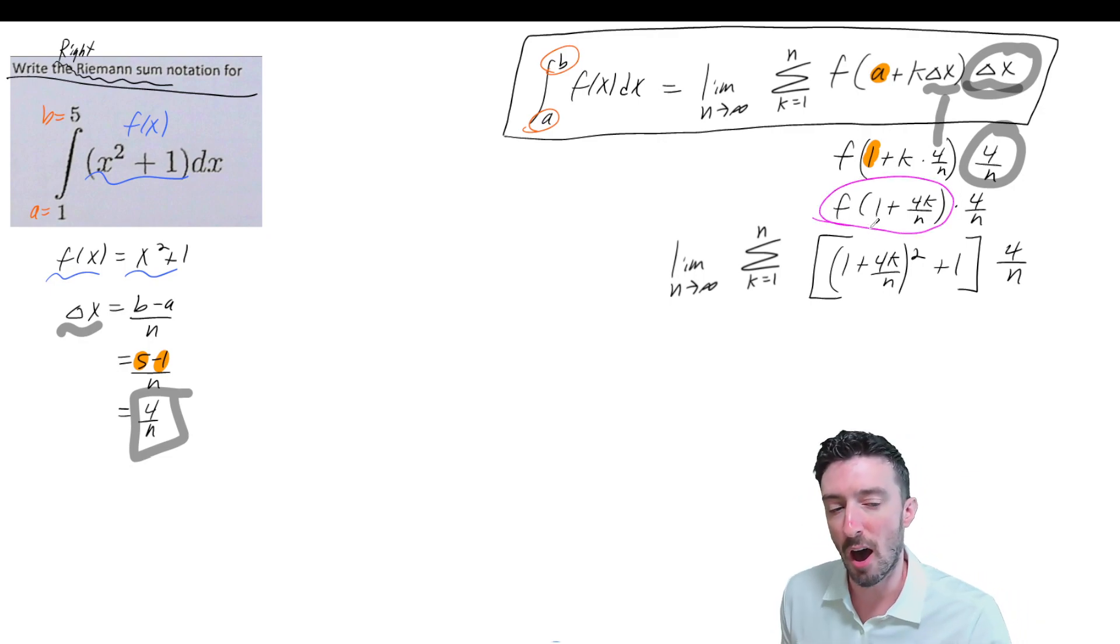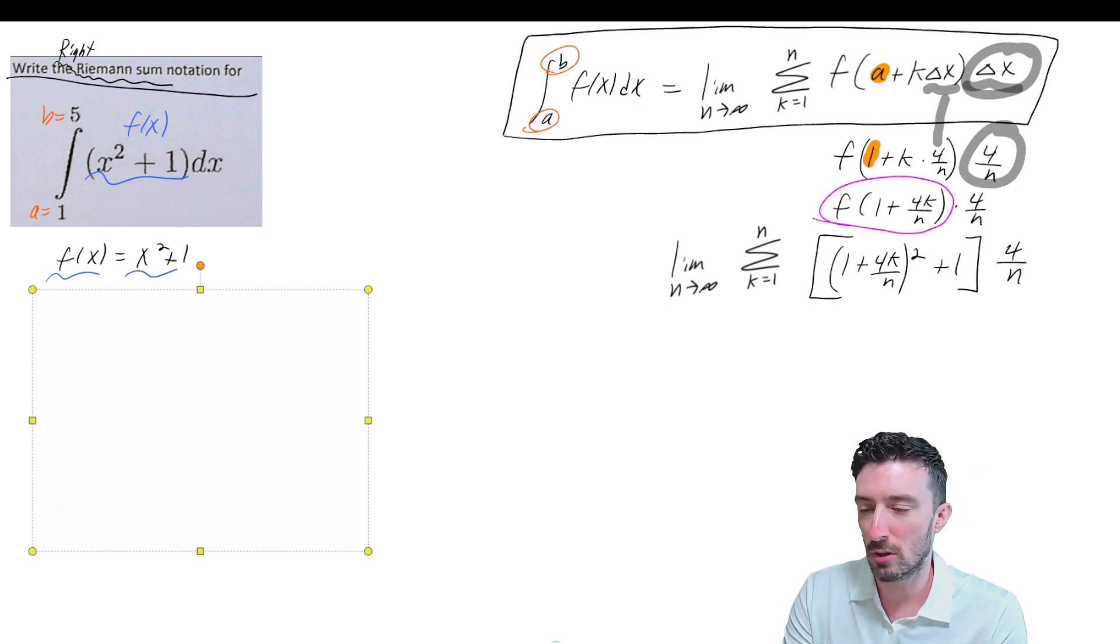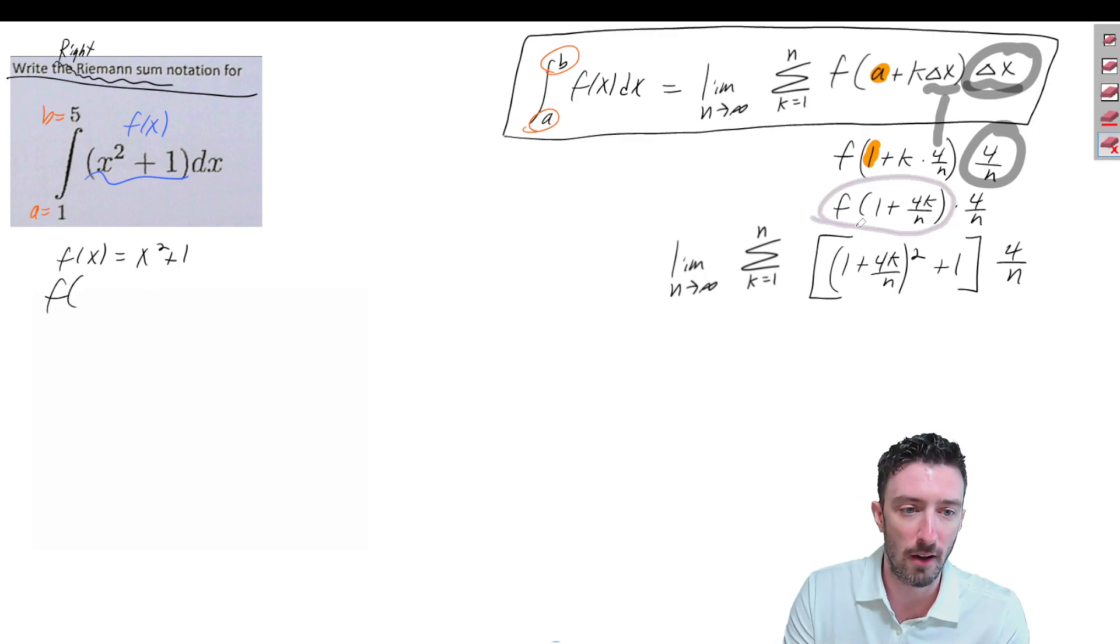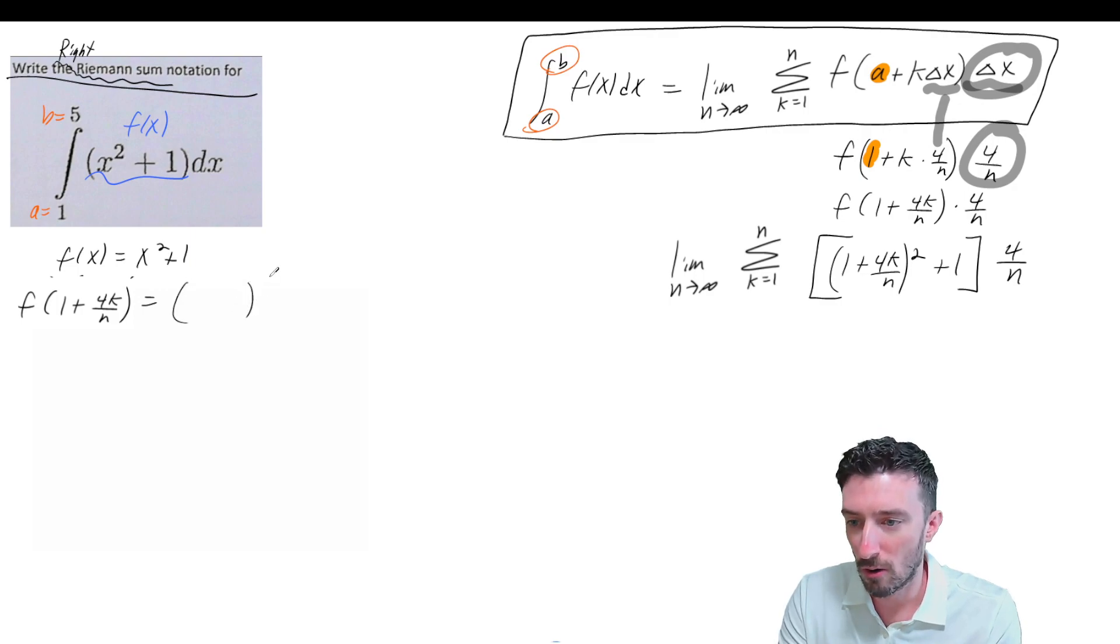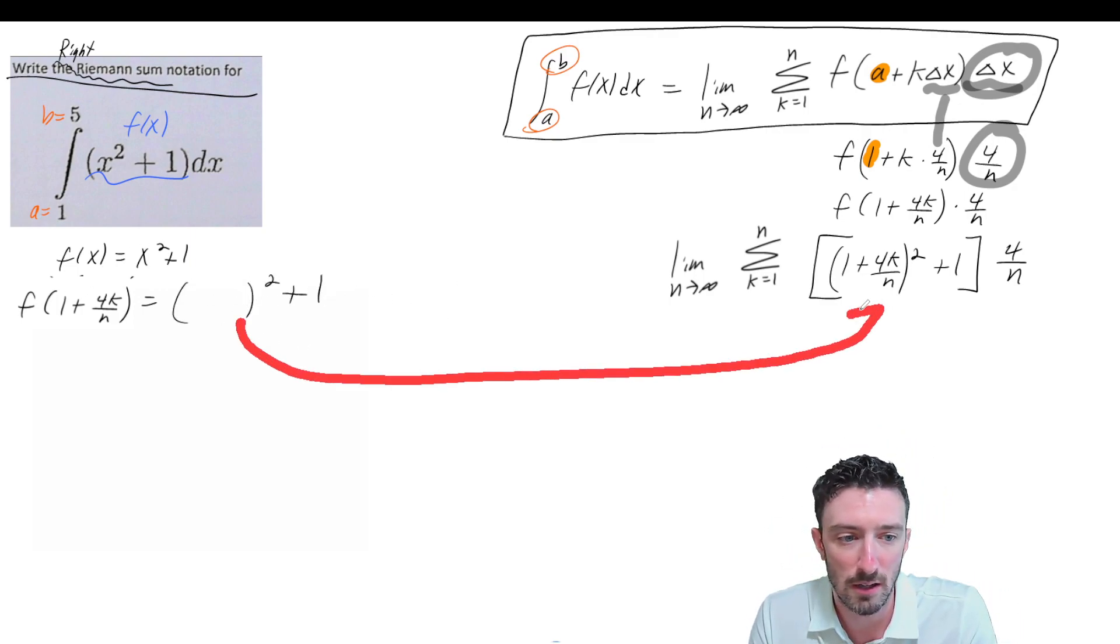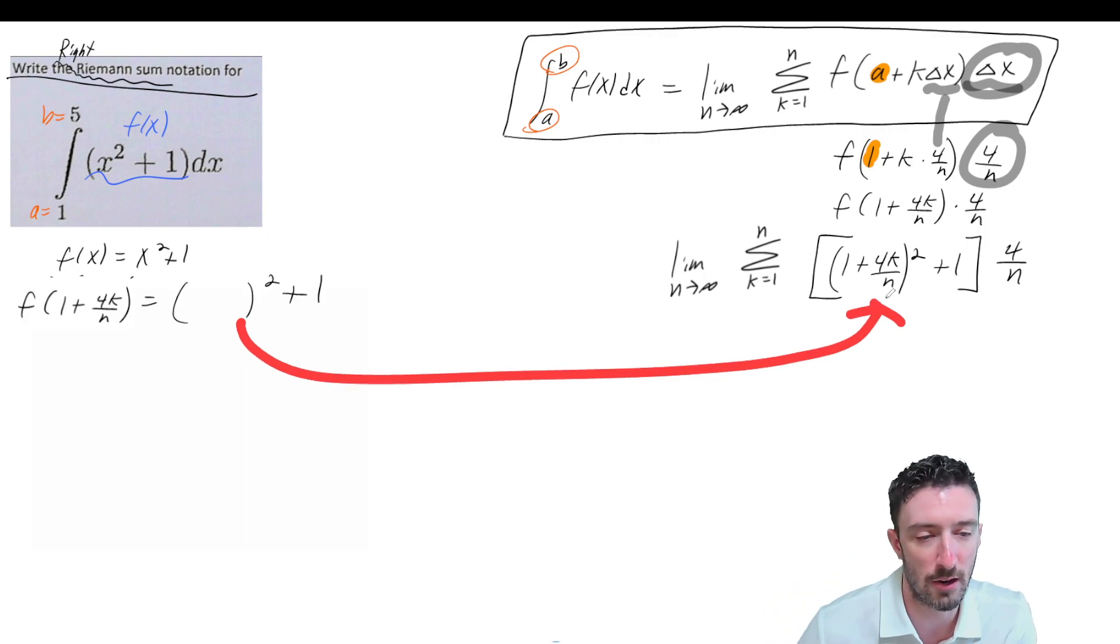If f(X) = X² + 1, well then that means f of all this junk is going to end up equaling all that junk squared plus one. And as you can see, I put that right in there for you. So that is all your f of whatever.